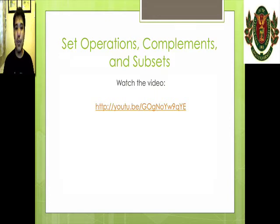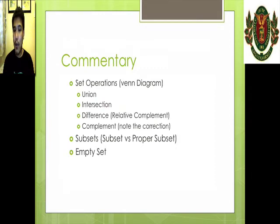Okay, now that you've resumed, let's go to my commentary. He talked about set operations, and he used the Venn diagram as a tool to describe each operation. He talked about union. He talked about intersection. He talked about difference, or relative complement. He talked about complement. And it has a correction. I will talk about it later. And then he talked about subsets. He differentiated subsets and proper subsets. And lastly, he also talked about empty set.